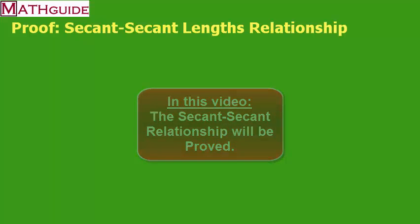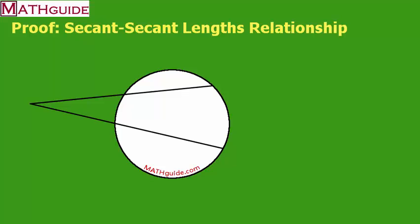All right, let's start with the diagram. In this diagram you can see that we do have two secant lines.